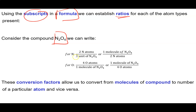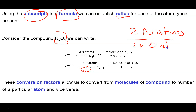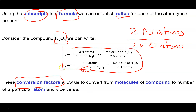Here's a molecular compound where we can write a whole bunch of ratios. We get two nitrogen atoms for every one molecule of N2O4, and one molecule of N2O4 for every two nitrogen atoms — each ratio can be written either way up. For oxygen, we get four oxygen atoms for every one molecule of N2O4, or one molecule for every four oxygen atoms. We could also say there are two nitrogen atoms for every four oxygen atoms. These fractions are what in chemistry we call conversion factors, allowing you to convert from molecules of compound to numbers of a particular atom.